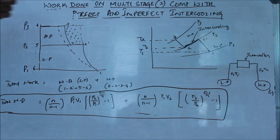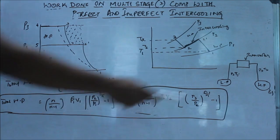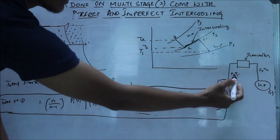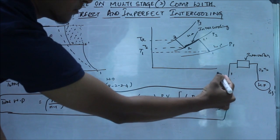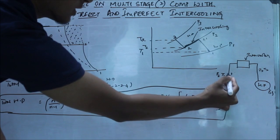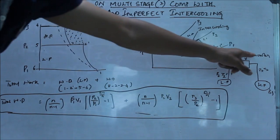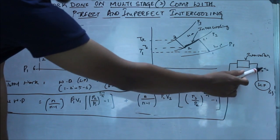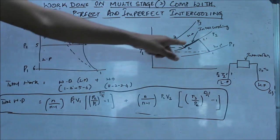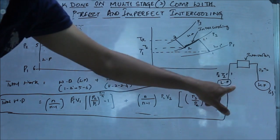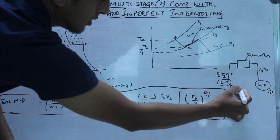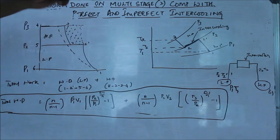Even if we look at the schematic diagram here, it comes out of the low pressure cylinder with the pressure P2 and temperature T2', and it will pass through the intercooler. When it comes out of the intercooler, it will have a pressure P2 and temperature T2, which is not equal to the initial temperature T1. That is called imperfect intercooling.